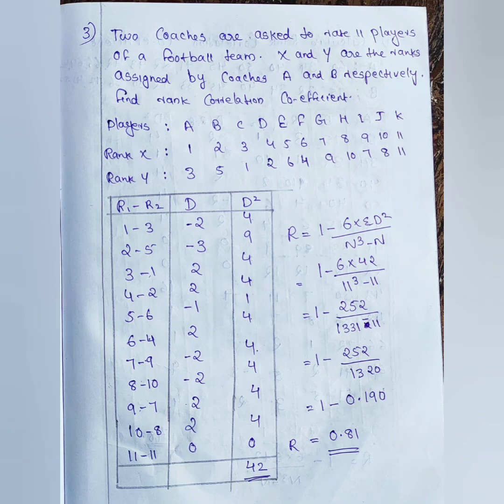This is another question. Two coaches have ranked 11 players. We have rank X and rank Y — rank X is the first rank and rank Y is the second rank. There are two different differences, and the d squared values are computed the same way.